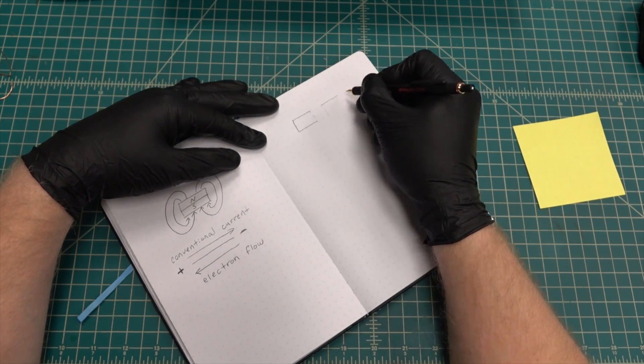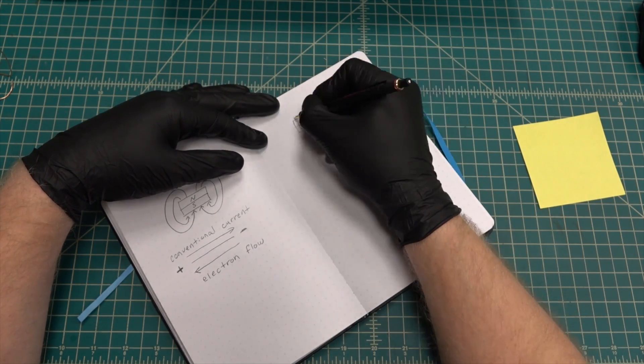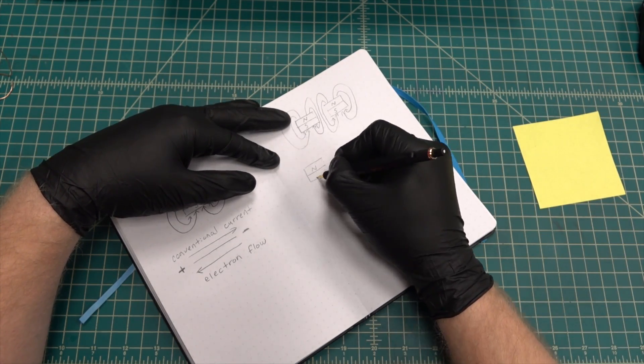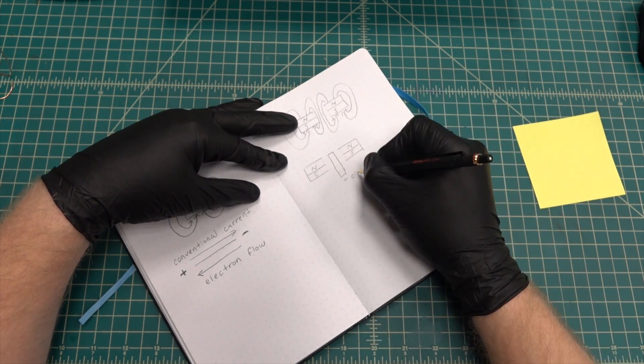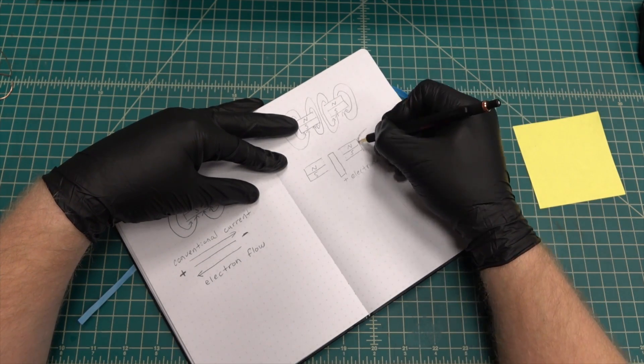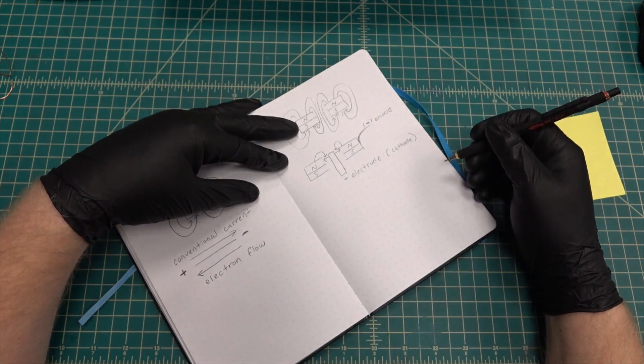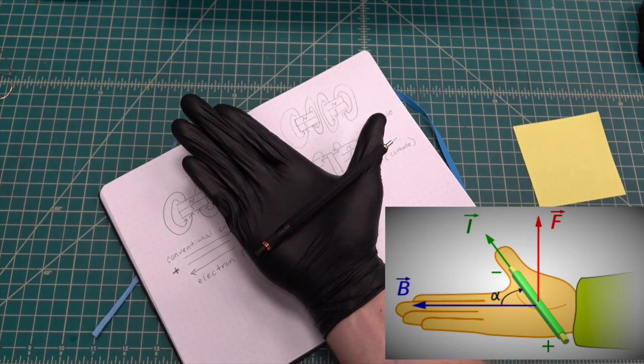Now imagine we're slicing the ring magnet down the center from the north pole to the south pole, with the positive electrode in the center of the magnet and the negative electrode connected to the outside of the magnet. The current from the arc flows from the center electrode to the magnet, and the direction of the magnetic field is downward through the center of the magnet from the north pole to the south pole.